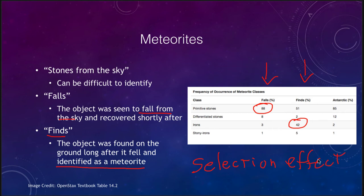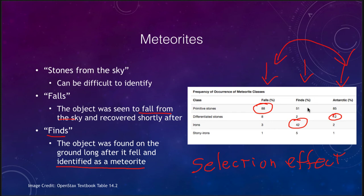What we observe in finds is not a truly representative sample. The falls would be a good example of the types of meteorites we actually get because it is a completely random sample. We also find meteorites in Antarctica, and notably those results are very similar to the falls — showing lots of stony meteorites and very few iron meteorites, quite different from what we see in the general finds. In Antarctica we get a somewhat different perspective because we are conducting specific searches for meteorites there.